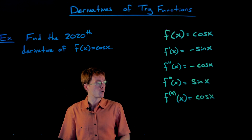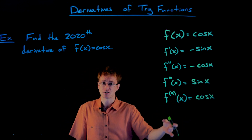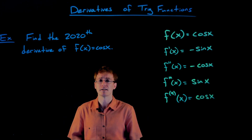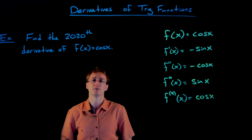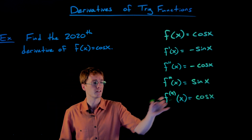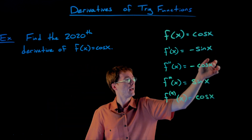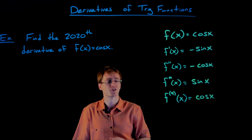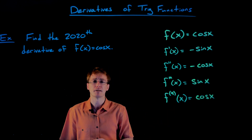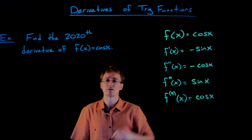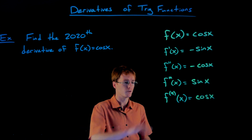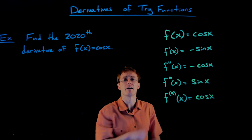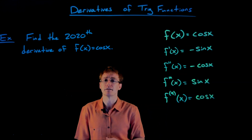Now if we look at our table, we can see repetition starting. Every time we take the fourth derivative of cosine — and the same is true for sine — we get back to where we started. We don't need to write the fifth derivative separately because it's just the derivative of cosine again, which is negative sine. The cycle continues: negative sine, negative cosine, sine, cosine, and repeats.